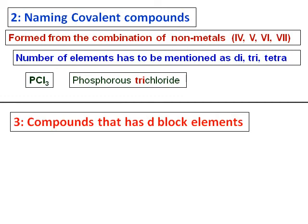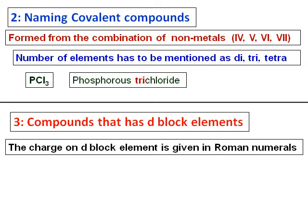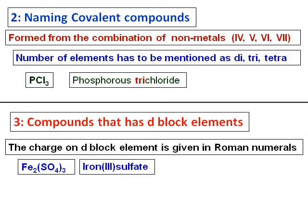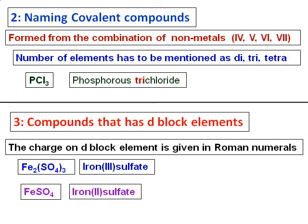We have different rules for compounds with d-block elements. The charge on a d-block element will be given in Roman numerals. For example, Fe₂(SO₄)₃: looking at the prefix for SO₄, it is 3, therefore the charge on iron is 3+, so it will be iron(III) sulfate. For FeSO₄, the charge on sulfate is 2−, so to balance the 2− charge on sulfate I need 2+, which gives iron(II) sulfate.